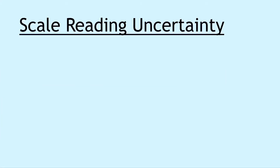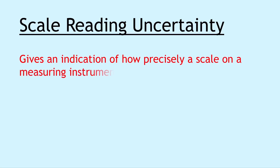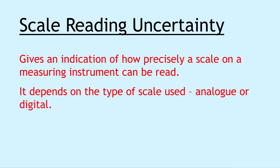Firstly, we have scale reading uncertainty. This gives an indication of how precisely a scale in a measuring instrument can be read. Remember, it depends on the type of scale used, whether it's analogue or digital. Analogue scales have a scale reading uncertainty of plus or minus half the smallest scale division, whereas digital scales have a scale reading uncertainty of plus or minus one of the least significant digit.